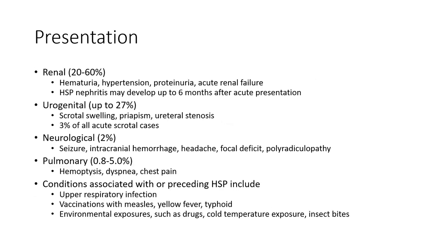GI complications include intussusception, pancreatitis, hydrops of the gallbladder, protein-losing enteropathy, and angiopathy. GI symptoms can precede the rash in up to 43% of cases. Renal involvement occurs in 20 to 60%, with hematuria, hypertension, proteinuria, and acute renal failure. HSP nephritis may develop up to six months after initial presentation. Urogenital involvement occurs in up to 27%, including scrotal swelling. Neurological involvement is seen in 2%, including seizures. Pulmonary involvement ranges from 0.5 to 5%.